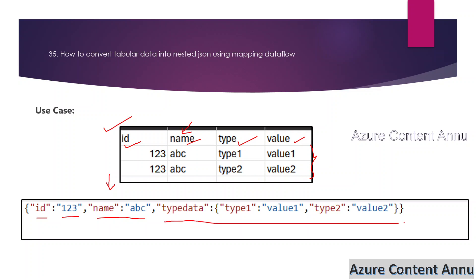The third key-value pair is a nested JSON. We need to create a new property called 'type_data' which does not exist in the input dataset. Its value should be a JSON containing key-value pairs from the two records — type1 having value1 and type2 having value2. We need to convert the row values into keys and their corresponding values as the values of those keys.